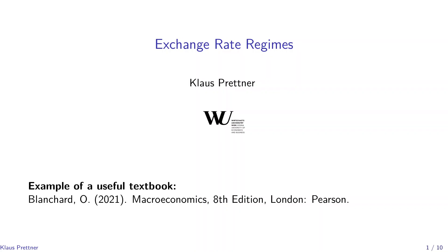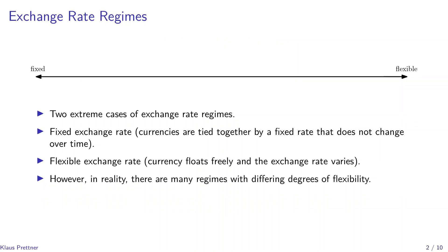This chapter deals with different exchange rate regimes and their properties. In general, one can distinguish between two cases. The exchange rate could be fixed, where currencies are tied together by a fixed rate which does not vary over time. On the other hand, a currency could be flexible, so that it is not tied to another currency and floats freely. In that case, the exchange rate varies over time depending on demand and supply of the given currency on the world market.